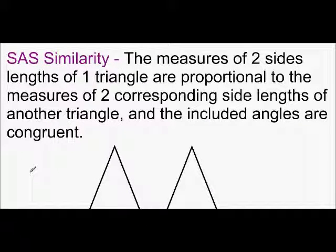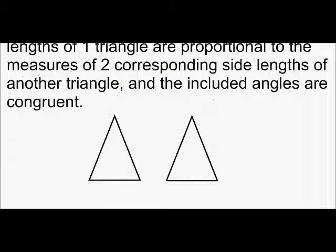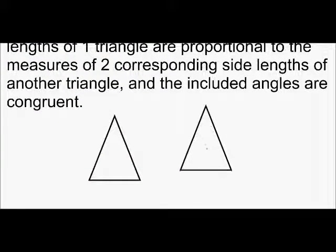Last, we have side-angle-side similarity. So, the measures of two side lengths of one triangle are proportional to the measures of two corresponding side lengths of another triangle, and the included angles are congruent.